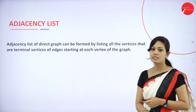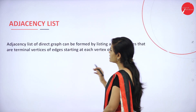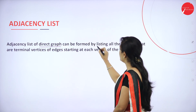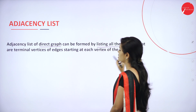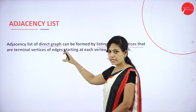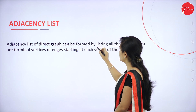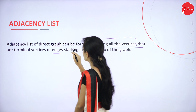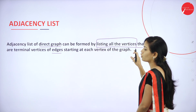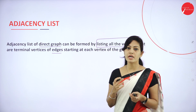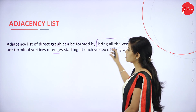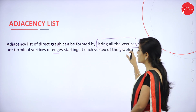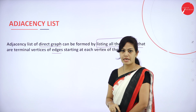So what is an adjacency list? The adjacency list of a directed graph is formed by listing all the vertices that are terminal vertices of edges starting at each vertex of the graph. In the adjacency list, we list all the vertices that are terminal vertices of edges starting at each vertex. I will explain with an example.